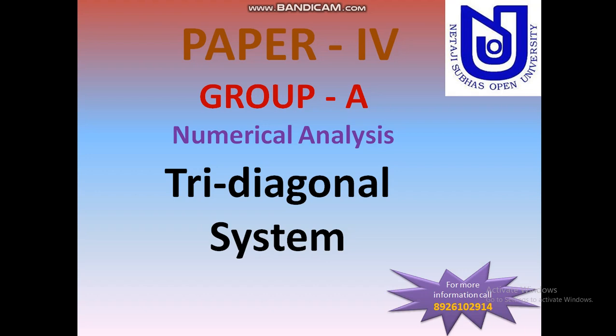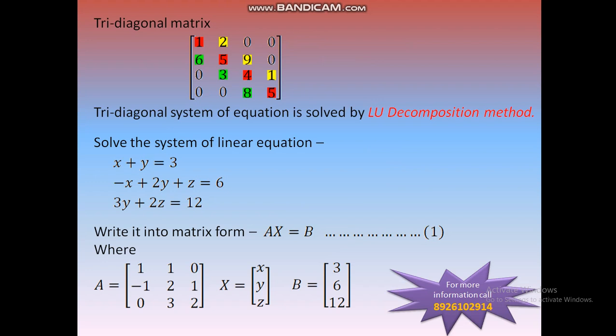Let's see the Tri-Diagonal Matrix. A Tri-Diagonal Matrix has a diagonal element in white: 1, 5, 4, 5. The second line is 2, 9, 1. The next line is 6, 3, 8. This line contains the most important element. The methods used are Gauss Elimination, LU Decomposition, and Thomas method. This method applies to a system of linear equations — how do we convert the matrix?